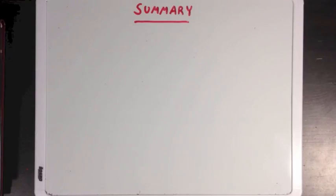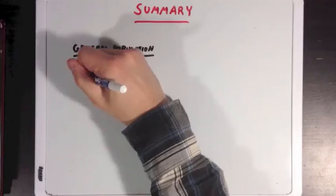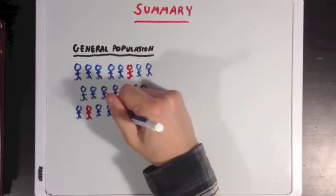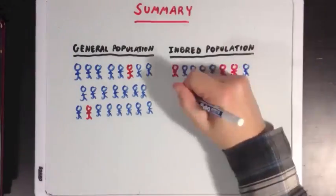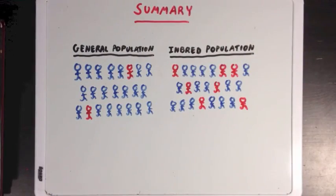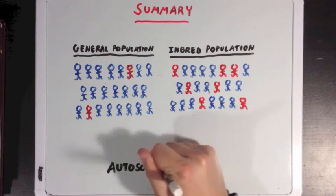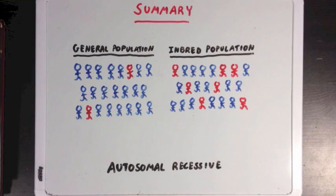So what did we learn? First we learned that certain inbred populations can have many more individuals that may carry a diseased chromosome than the general population. But we also learned that this is mostly a concern with autosomal recessive diseases, since those generally go more unnoticed than dominant ones do.